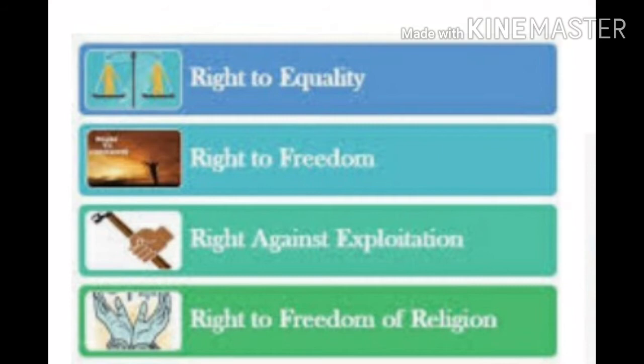In lesson number 3, Civics, we had taken information about the Federalism Division of Powers. In that, we have studied Division of Powers — Union List, State List, Concurrent List, and Residuary Powers. Afterwards, we had taken information about Union Territories, then Parliamentary System of Government, and we have an Independent Judiciary System.